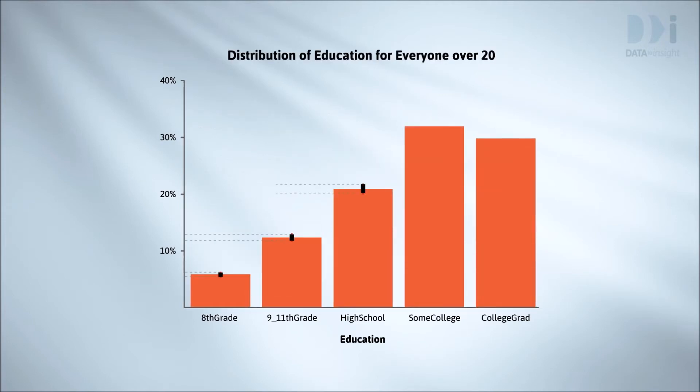But when we look at everyone over 20 — nearly 7,000 people instead of only 350 — the intervals are much narrower. The true heights of the bars are fairly precisely estimated, and there is no overlap here between any of the comparison intervals. The true population percentages are clearly in the same order as we see with the bars.